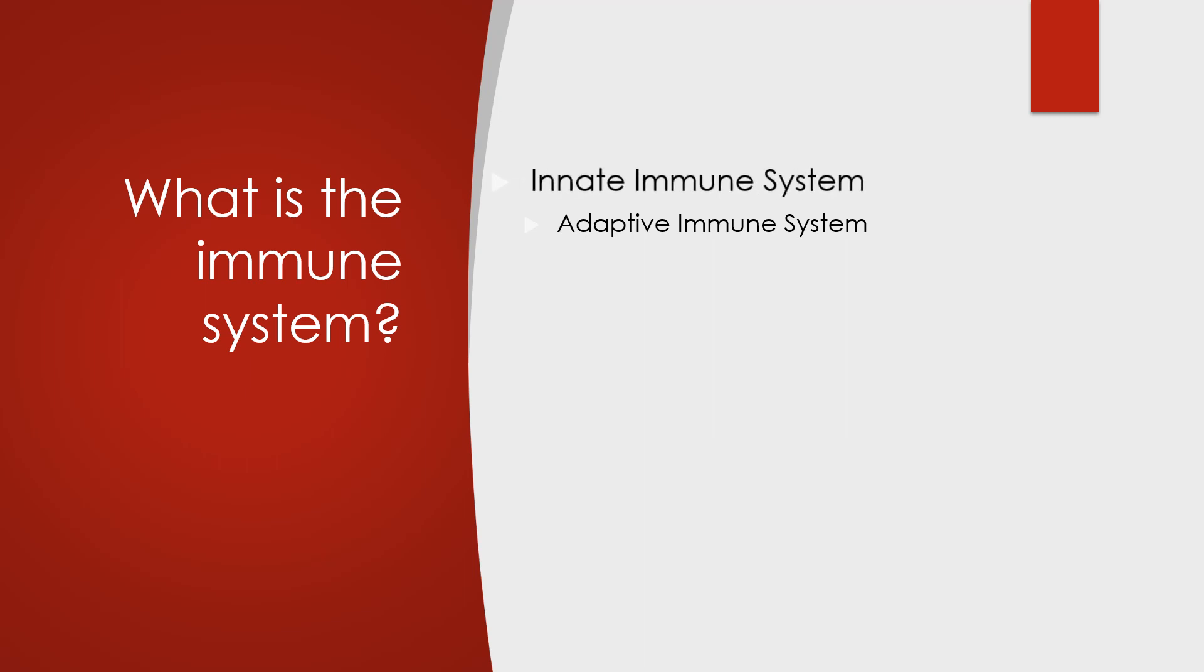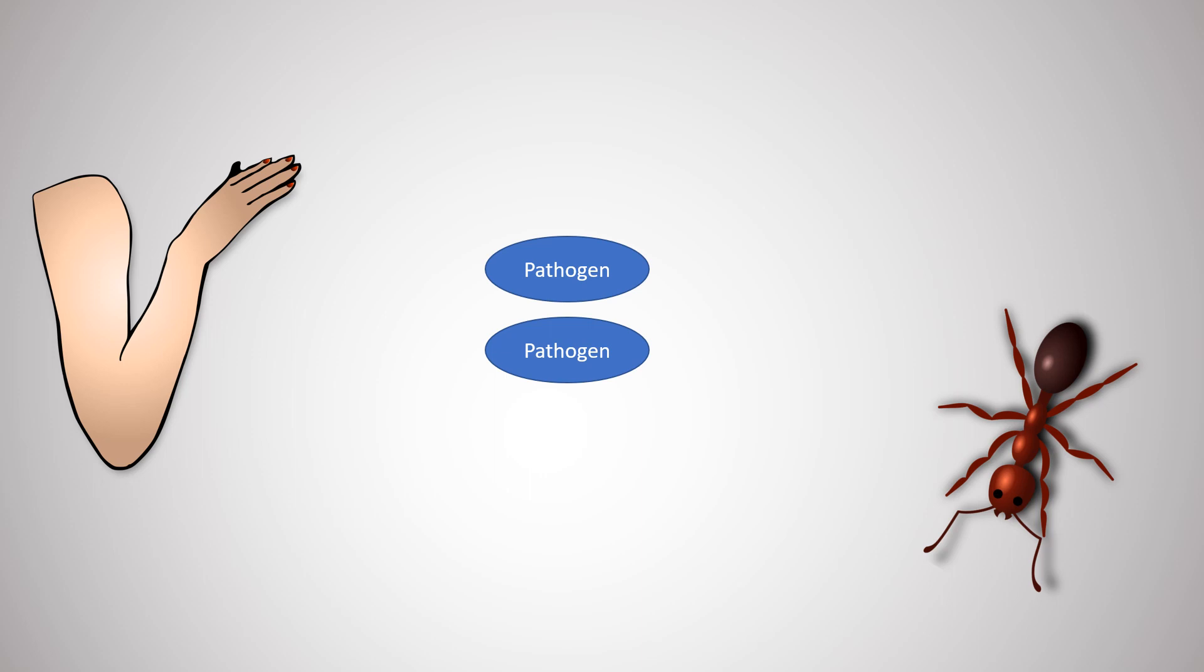Let's start by exploring the innate immune system. Most animals have a protective exterior that serves as the first line of defense against pathogens. Humans have a protective layer of dead cells and keratin, while insects have an outer layer called cuticle.